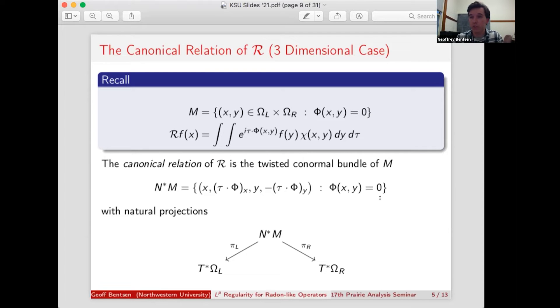So it has this nice explicit formulation in terms of just the derivatives of phi restricted to your set M. And the natural projections, pi l and pi r, are respectively just the projections to these first two components for pi l and these last two components for pi r.